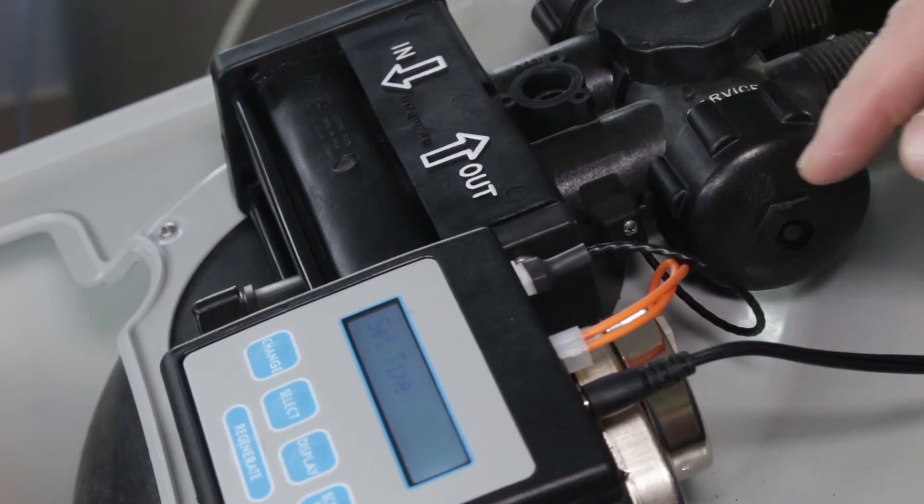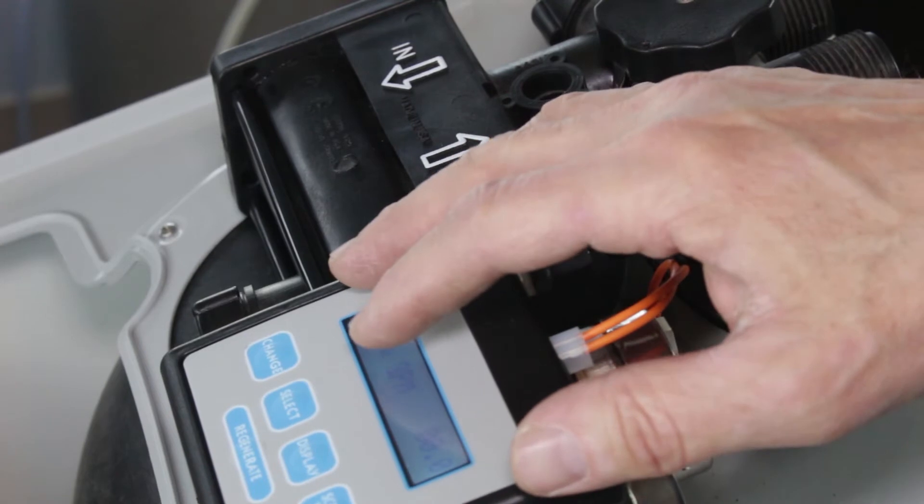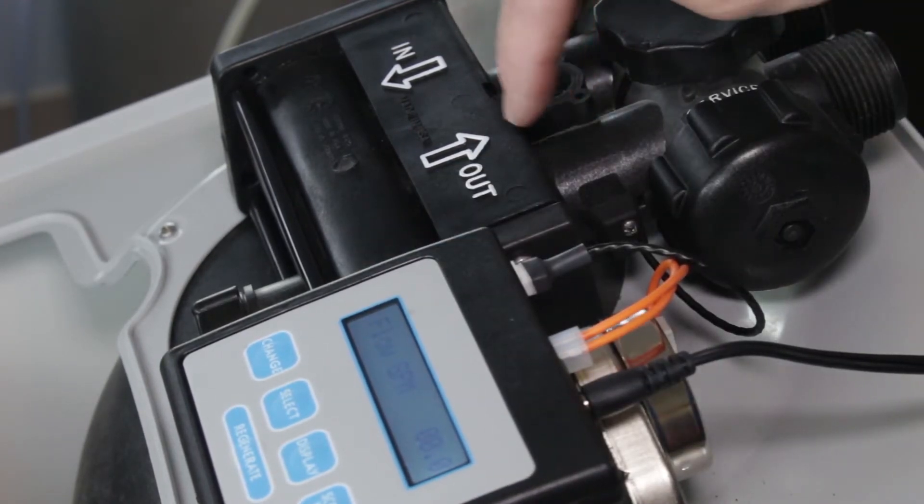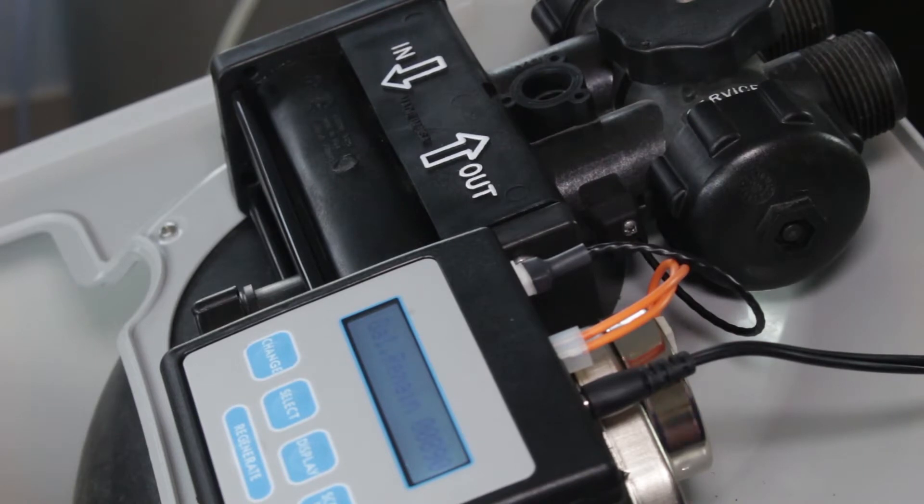If you replace the flow sensor and you're still not getting a reading on the controller that means either the controller is defective or the turbine inside the bypass is defective. So those two areas need to be checked out next.